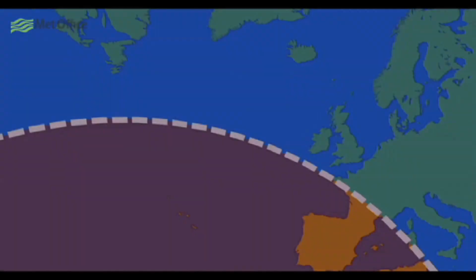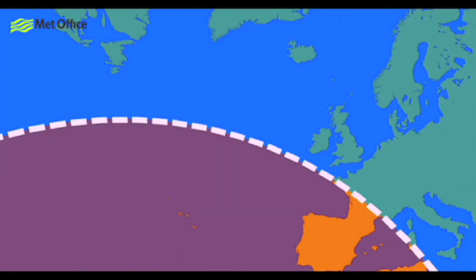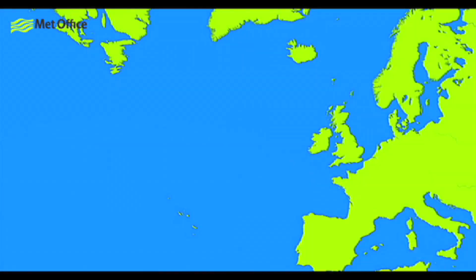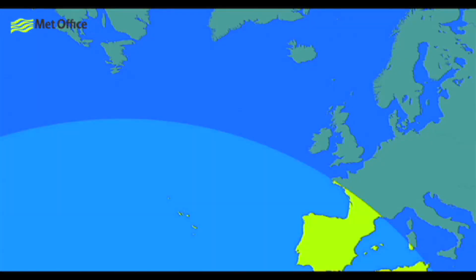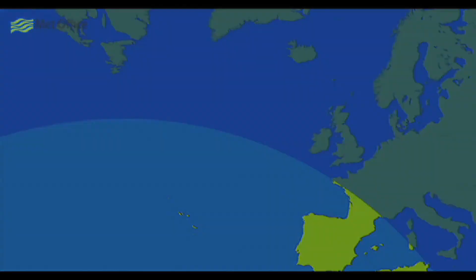A weather front is the boundary between two bodies of air with different temperature and humidity. These differences depend on where the air has come from on the globe. For example, air sitting over tropical oceans becomes very hot and humid, while in contrast, air over the Arctic becomes very cold and dry.